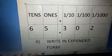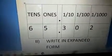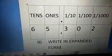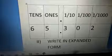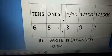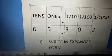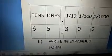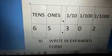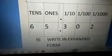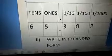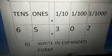So, children — 6 tens, 5 ones, then decimal point. You should keep it. Then 3, 0, 2. That's all, children. This method is very easy, you know.